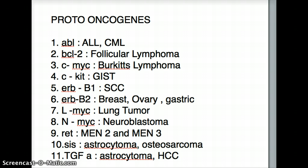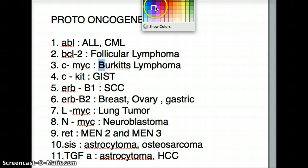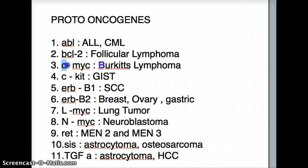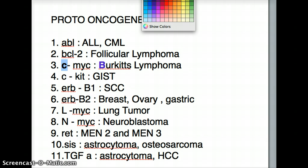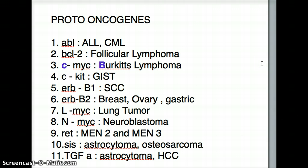Followed by CMYC, which causes Burkitt's lymphoma. Another way of remembering is that the letters B and C kind of follow each other — Burkitt's lymphoma caused by CMYC. Then followed by CKIT. This one is the odd one; there's no way to logically relate them. CKIT causes GIST, or gastrointestinal stromal tumor.